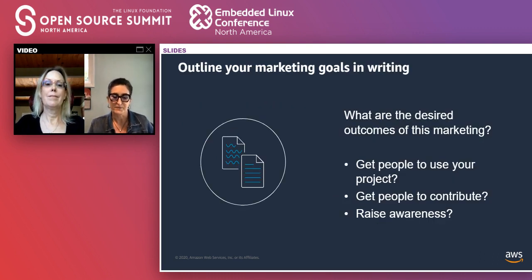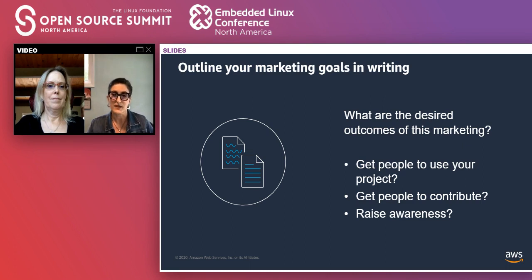Outline your marketing goals in writing. Think of it as a thesis statement in an article — it helps keep you focused. Having clearly defined, reasonable goals will help your team stay focused on the marketing that matters, rather than throwing messages against a wall hoping that something will stick. What are the desired outcomes of your marketing efforts? Do you want to increase product adoption, gain contributors, or something else? Build your marketing content plan around these goals. Content that does not support your marketing goals might lie outside the scope of your efforts. It might sound like fun to create that content, but if it doesn't help you hit your goals, maybe it needs to be fun for somebody else to create.